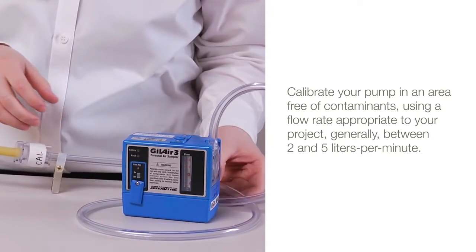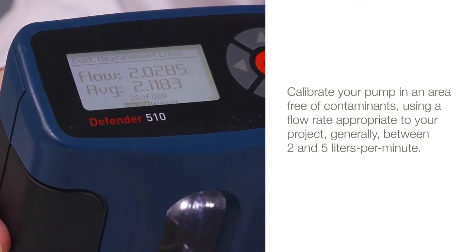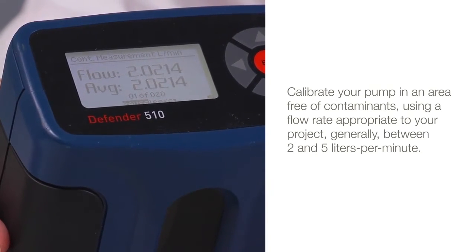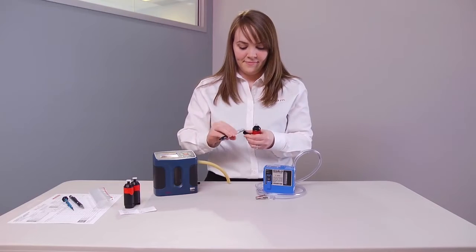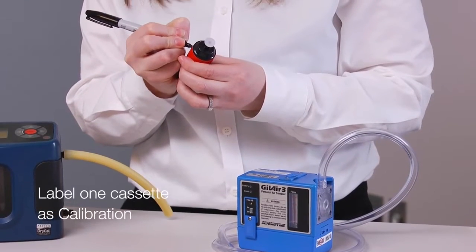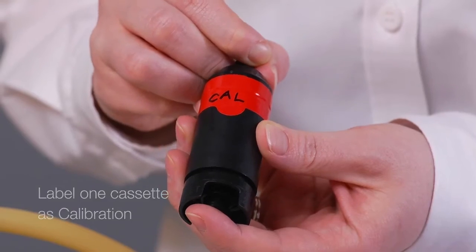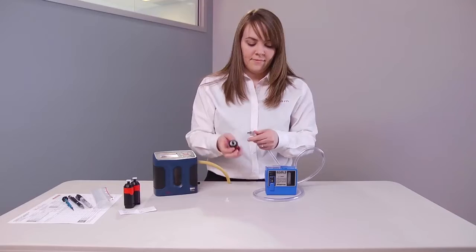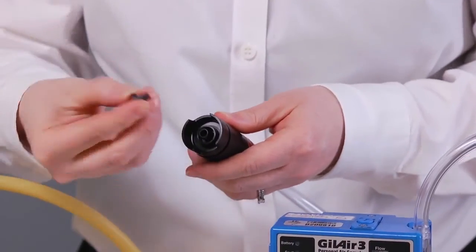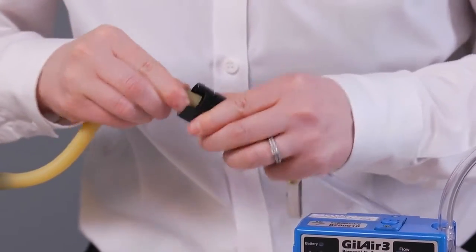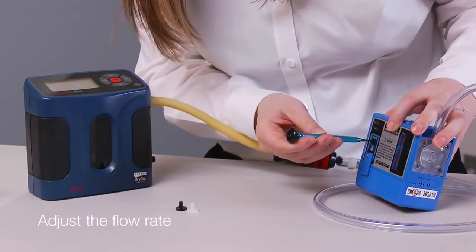Calibrate your pump in an area free of contaminants using a flow rate appropriate to your project, generally between 2 and 5 liters per minute. The key is to collect samples open-faced for uniform sample deposition on the filter. Label one cassette as calibration and follow routine calibration procedures. Connect the cassette, calibrator, and pump together, and then adjust the flow rate.